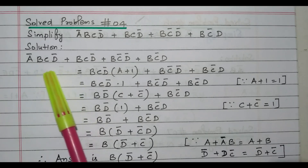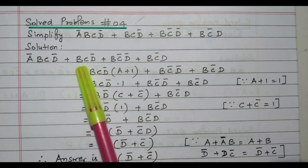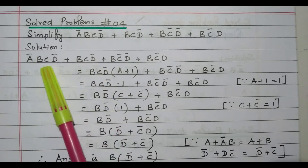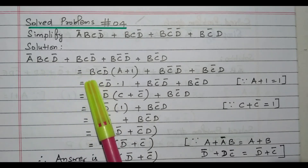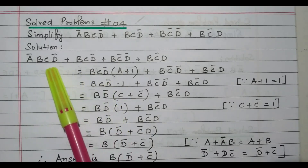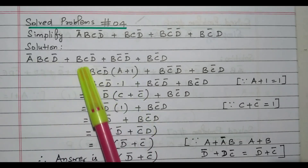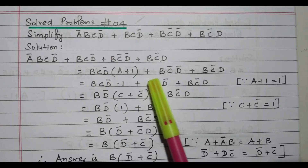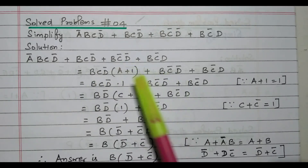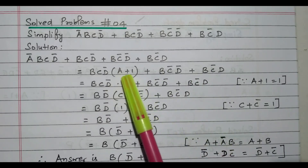We'll try to take three variables outside so we can proceed with simplification. It is clear that bcd̄ is available in the first term, the second term, and also in the remaining terms. So we'll take bcd̄ outside. After factoring, we have bcd̄(ā + 1) + bc̄d̄ + bc̄d.